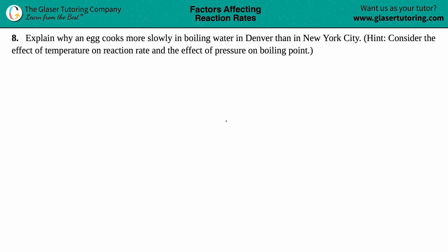Number eight, explain why an egg cooks more slowly in boiling water in Denver than in New York City. Hint, consider the effect of temperature on reaction rate and the effect of pressure on boiling point.